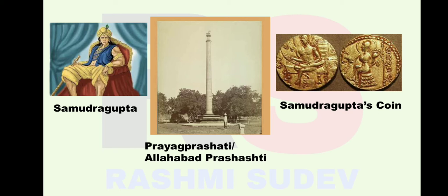Samudragupta defeated small neighboring kingdoms and extended the empire from Assam to Punjab. He conquered the eastern coast and Kanchi in Tamil Nadu. Due to his victories, he became very famous, and the kings of northwestern frontiers and the kings of Sri Lanka made friendship with Samudragupta and signed many treaties.